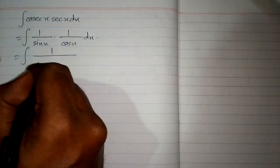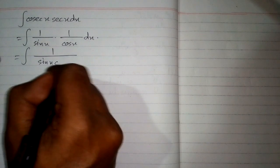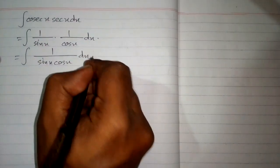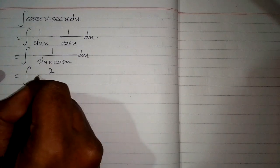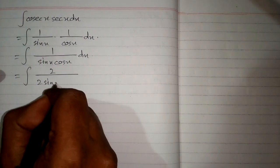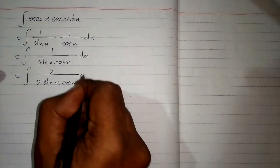So we have 1 upon sin x cos x dx. And we multiply it by 2 and divide it by 2, so we have 2 upon 2 sin x cos x dx.